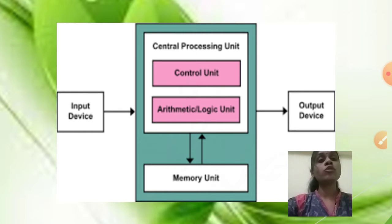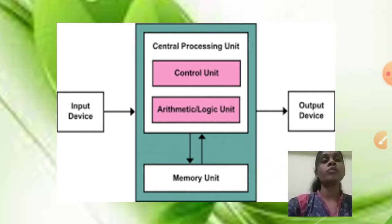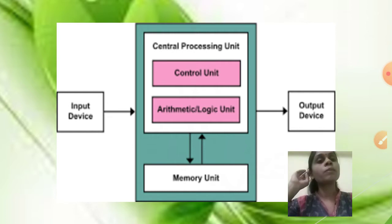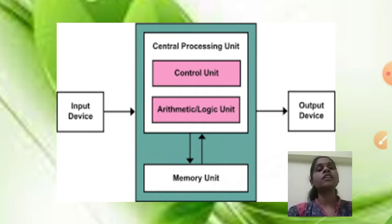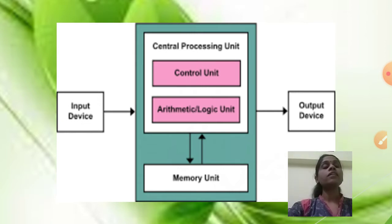After all this processing is done and completed, it goes to the output device. Let me explain the CPU once more. Central Processing Unit has three parts: Control Unit, Arithmetic and Logical Unit, and Memory Unit. The Control Unit controls all processes going in and coming out. ALU handles addition, subtraction, multiplication, and division. Memory Unit consists of the saving and storing process.